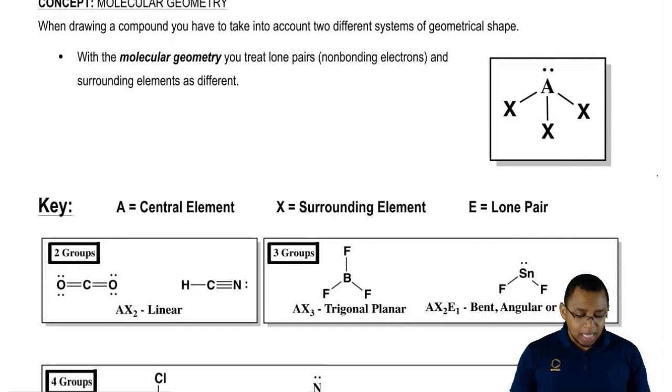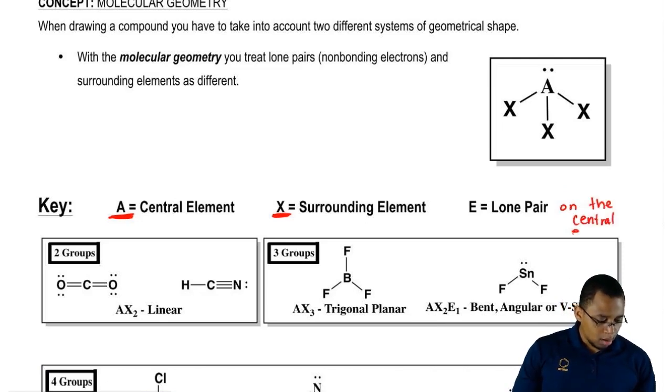Remember, here's the key. Our central element is A. The surrounding elements around that central element are X, and then the lone pairs on the central element are E.